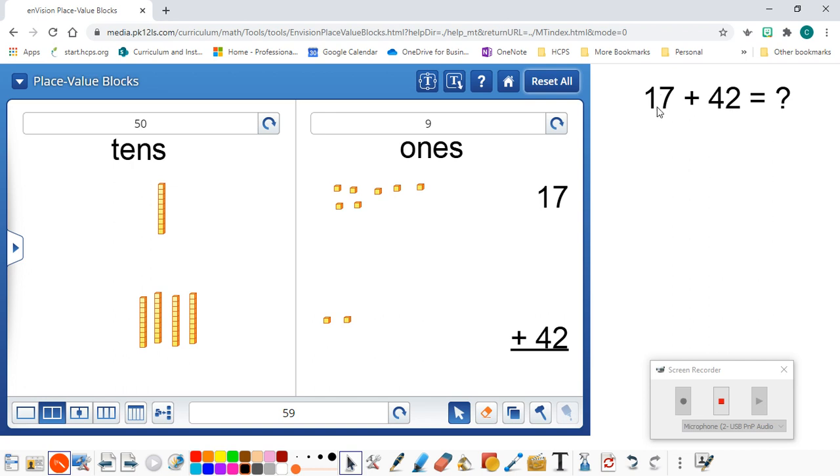And we did that by breaking the addends apart, adding the tens, adding the ones, and then adding the partial sums. And that's how you do it.